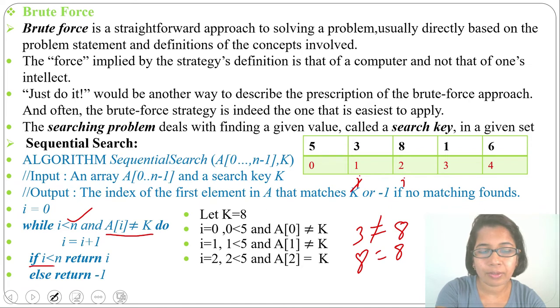Now, i value is less than n. 2 is less than 5. Return i. So, we'll return 2. We are searching the key 8. We found 8. Its index is 2. So, we'll return 2.